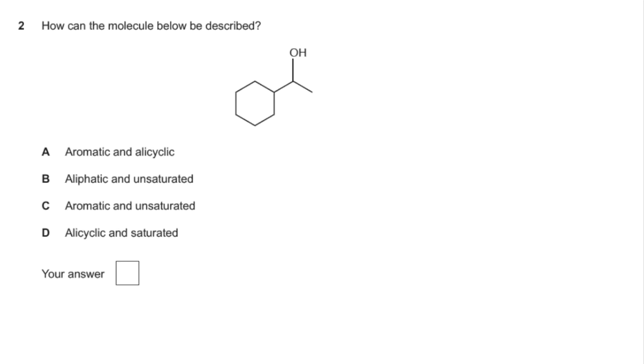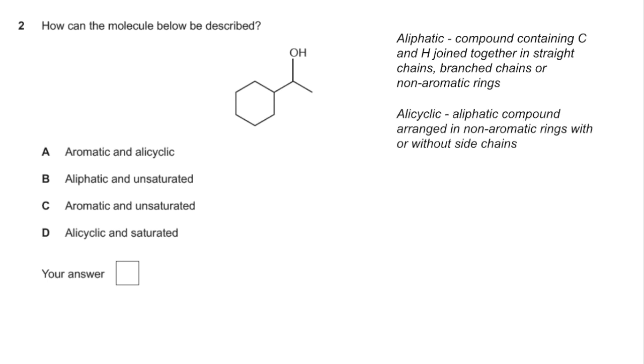Question 2. This one's testing your knowledge of basic organic definitions. I'll run through them all first. Aliphatic: compound containing carbon and hydrogen joined in straight chains, branched chains, or non-aromatic rings. Alicyclic is an aliphatic compound arranged in non-aromatic rings with or without side chains. Aromatic is simply a compound containing a benzene ring.